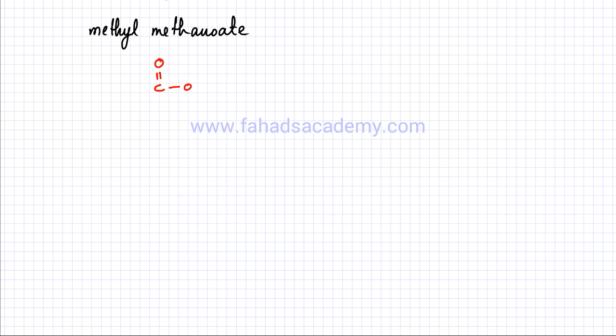Now let's do things slightly differently — I have a name and I'm going to try to draw the ester from it. The name is methyl methanoate. I know it's an ester because all esters have '-yl' and '-oate' in the name. Esters have the ester functional group, so I'll draw that. Methyl is the side attached to single bond O, so 'meth' means there's going to be one carbon atom attached to that single bond O side.